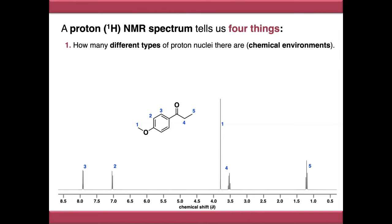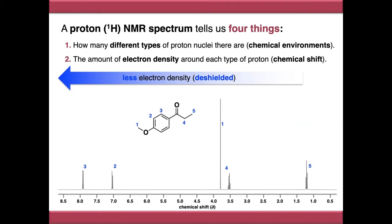The second piece of data a proton NMR spectrum can tell us is the amount of electron density around each type of proton and this is measured in chemical shift which you can see on the x-axis at the bottom of the spectrum. The further left you go on the spectrum the less electron density is around those proton nuclei and this is an effect called deshielding whereas the further right you go on the spectrum there's more electron density around the protons and this is known as shielding.